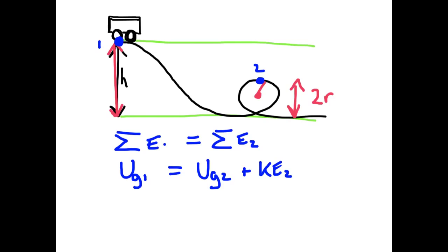Now at point 1 we have mgh for gravitational potential, but for point 2 we don't have as much height, we have 2r for height, and plus we have kinetic energy of 1 half mv2 squared. Well, what was v2?